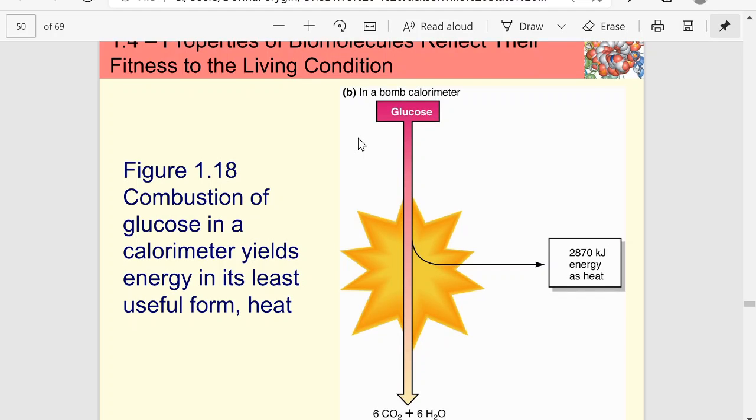Now, in a calorimeter, that's how we measure how many calories a food has. A calorimeter releases all of its energy in the form of heat in order to measure a temperature change to tell us how much energy a specific food has. But that's the least useful form of energy. Storing energy in a chemical form is much more useful for metabolic processes.